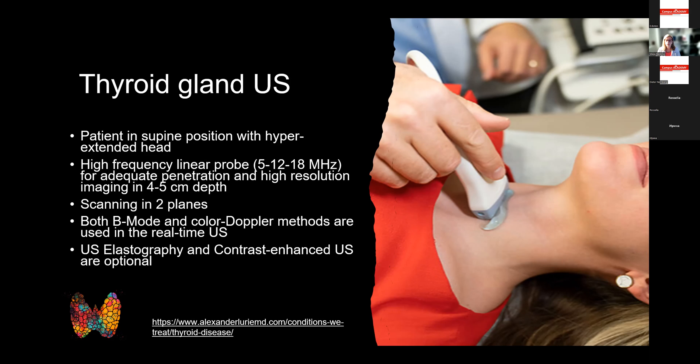We scan in two planes: a transverse view and a longitudinal plane, with the longitudinal axis adjusted along the longest axis of the thyroid lobe — slightly oblique along the trachea. B-mode or 2D imaging is used for anatomy assessment. Additional modalities include color Doppler for vascularization and nodule characterization, plus advanced methods such as ultrasound elastography subtypes and contrast enhancement.